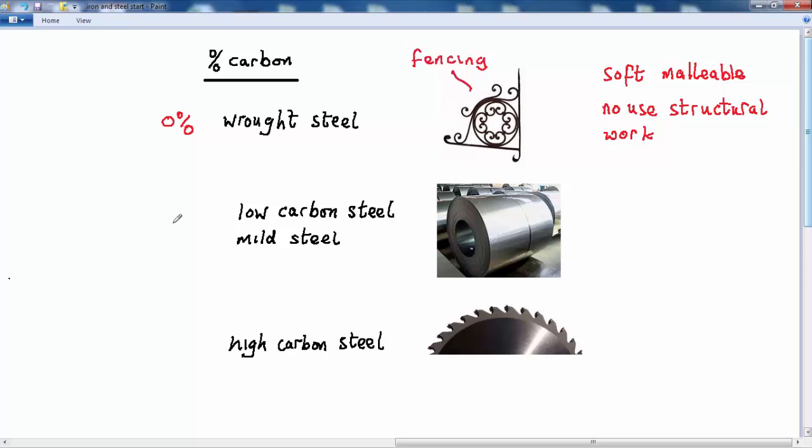The next type of steel is called mild steel, or low carbon steel, and that has a percentage carbon of up to about 0.25%. That's harder and stronger than wrought steel, but still has malleable properties, which makes it useful for car manufacture, car bodies.